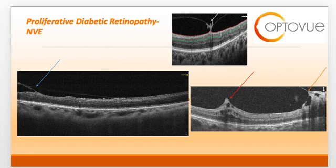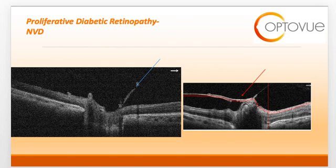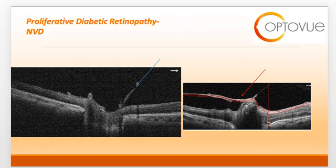Remember that there are more significant sequelae that can result from neovascularization, which we will discuss in a further slide. Here you can see neovascularization of the disc. Similarly to neovascularization elsewhere, NVD can emerge from the optic nerve and extend into the vitreous cavity. OCT is very helpful in differentiating neovascularization from IRMA, or intraretinal microvascular abnormalities, because IRMA are intraretinal and are not visible on regular spectral domain OCT. Neovascularization, on the contrary, is brilliantly illustrated on OCT as seen here.